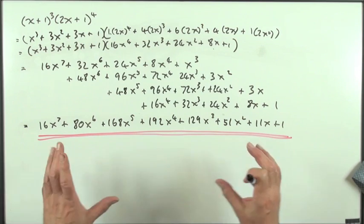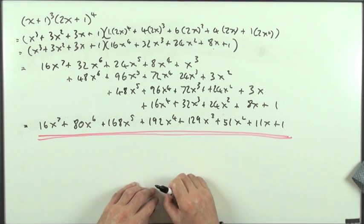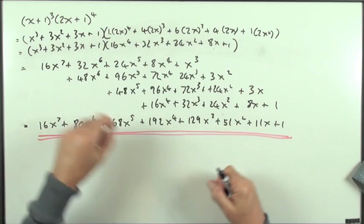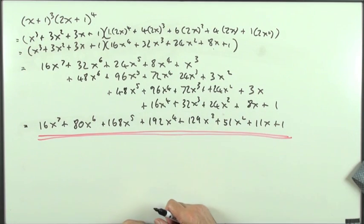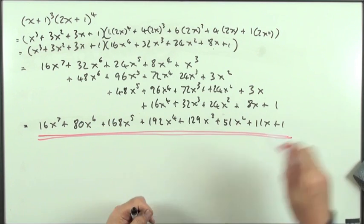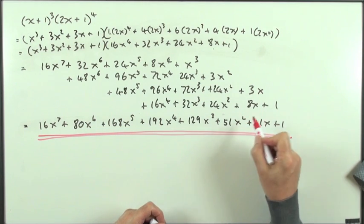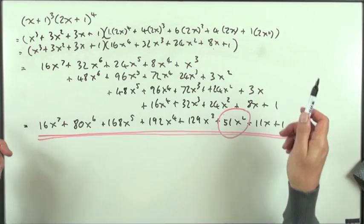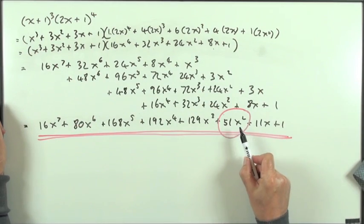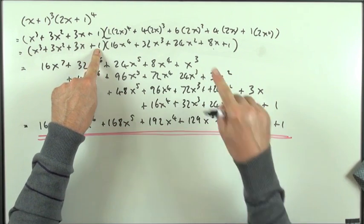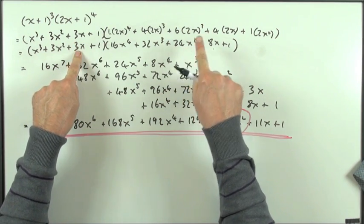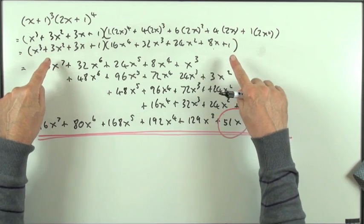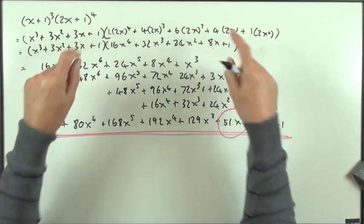Usually you're not interested in getting the whole expansion. You're only interested in homing in on a particular part of it — maybe the largest terms if x is a big number, because they'd be the most significant ones, or the smallest terms if x is a very small number. So for this one, if I wanted to find the x squared term, I wouldn't write it all out. What makes x squared? A 1 in this times an x squared in that, or an x in this times an x in that, or an x squared in this and the 1 in that — those three products, added together.